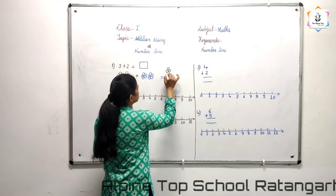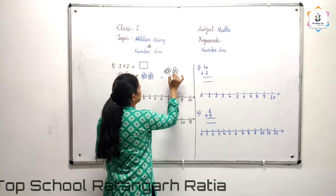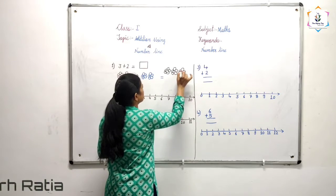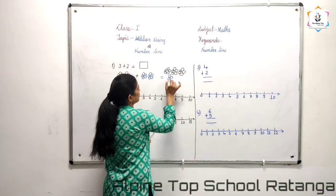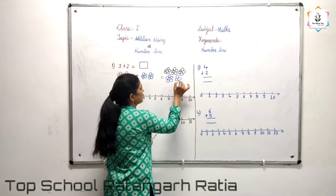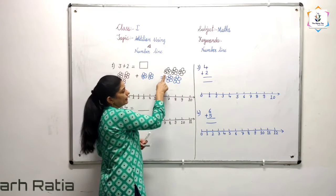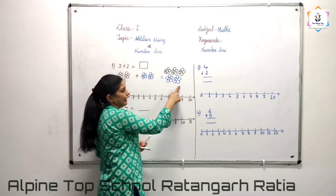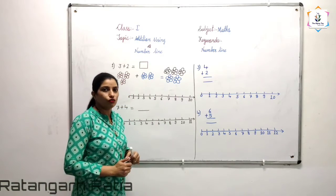See, 3 flowers. And my friend gave me 2 flowers. Now, how many flowers do I have? Count: 1, 2, 3, 4 and 5. How many flowers do I have now? 5 flowers.